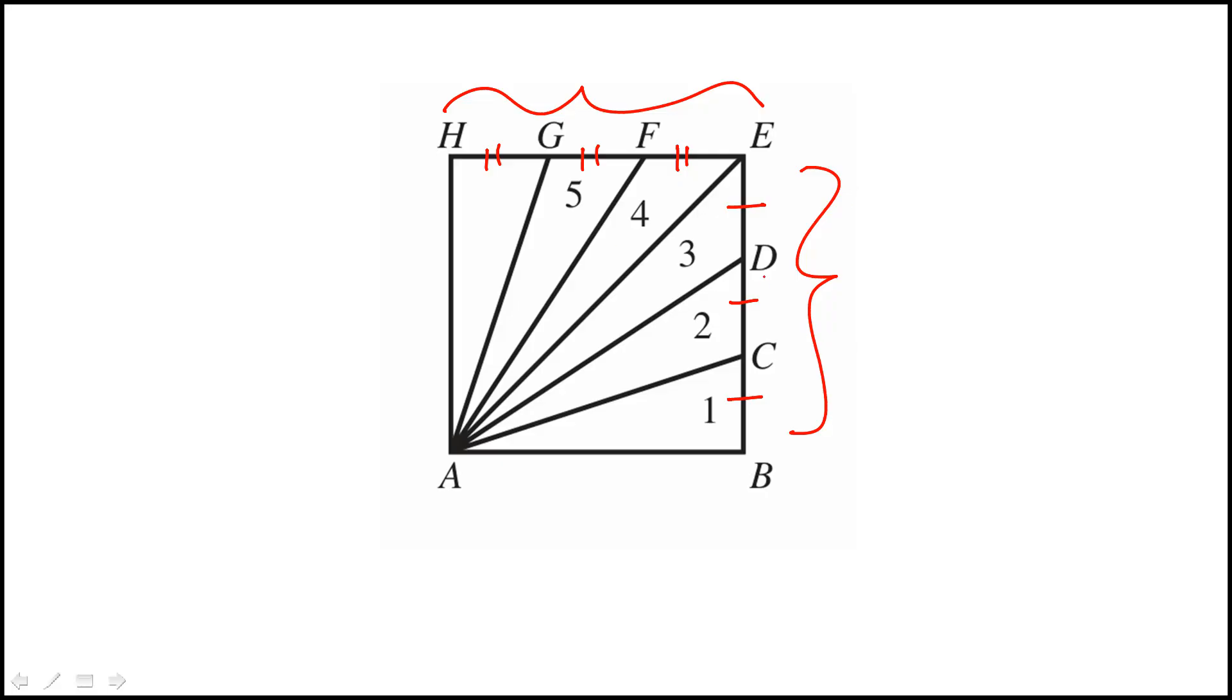Since we are trisecting the same side of the square, all of these are equal lengths.